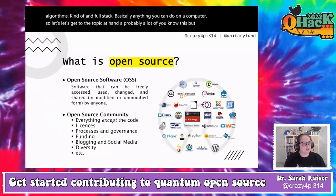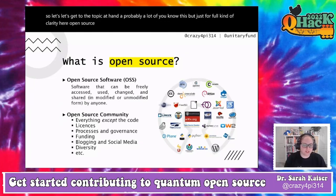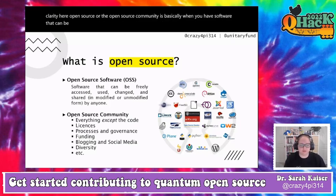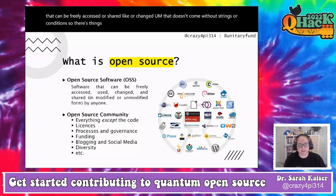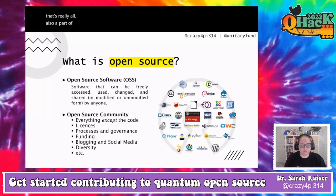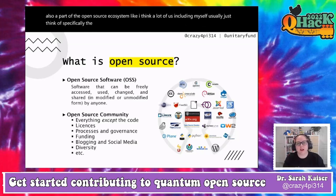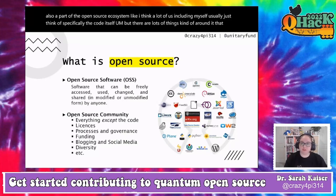Open source, or the open source community, is basically when you have software that can be freely accessed, shared, or changed. But that doesn't come without strings or conditions — there are things like licenses, processes, governance, and how these projects are funded. That's all part of the open source ecosystem, not just the code itself.